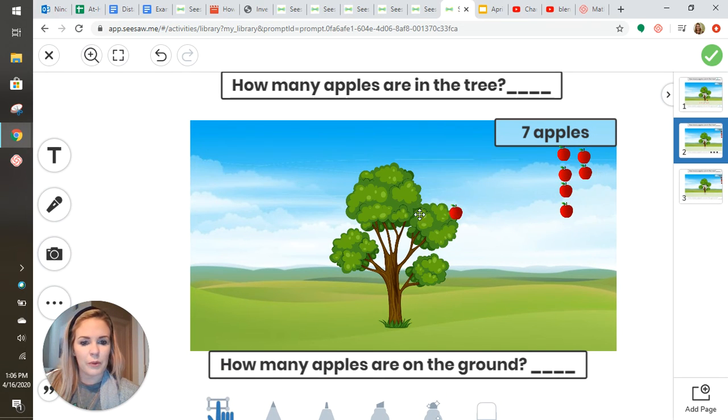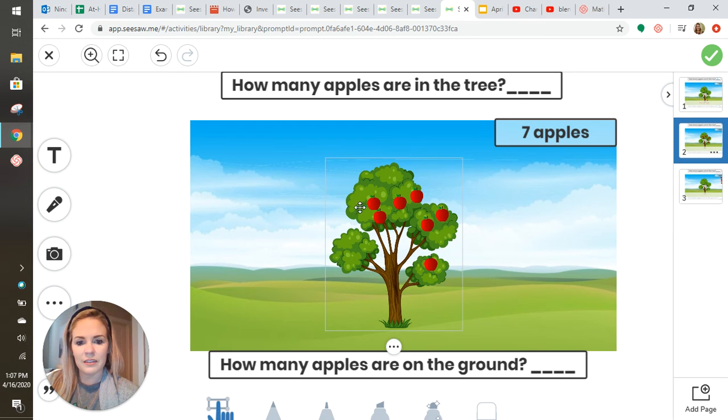Maybe this time you want to put all the apples in the tree. That means there would be seven apples in the tree. Let's count them: one, two, three, four, five, six, seven.